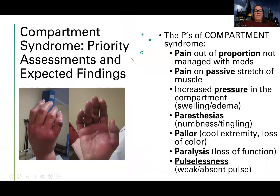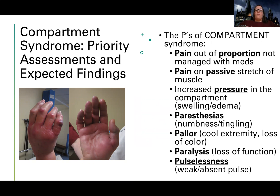So what are my assessment findings? What am I going to expect? The big things we're going to do for compartment syndrome is a neurovascular assessment. There are seven of them - the P's of compartment syndrome - these are the abnormalities you're going to find. They're going to have pain out of proportion. It's normal to hurt after a fracture, but if their pain is just relentless, getting worse, or it was managed with meds and now suddenly it's not - those should be warning signs. That's not normal.